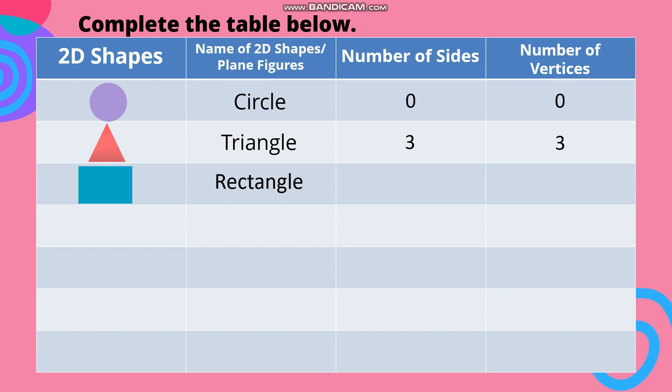Plane figure - rectangle. Number of sides - 4. Number of vertices - 4. Number 4: Plane figure - square. Number of sides - 4. Number of vertices - 4.